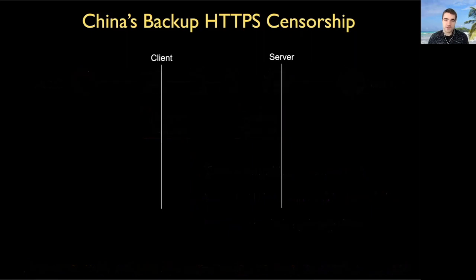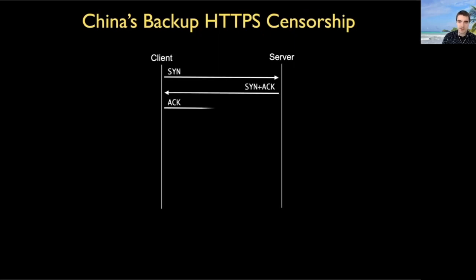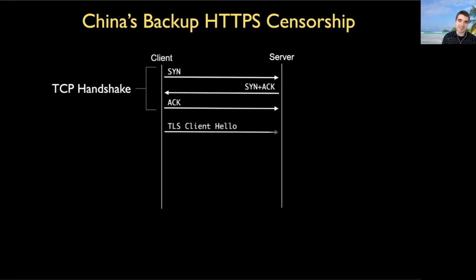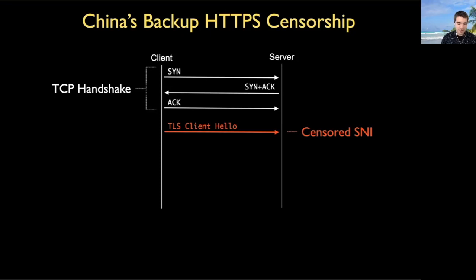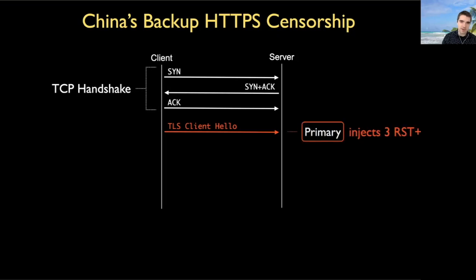Let's walk through where these sensors operate. Consider the start of a normal HTTPS connection. We first start with the TCP three-way handshake: SYN, followed by SYN-ACK, followed by ACK. Once complete, the client starts the TLS handshake and generates a TLS client hello — the packet that contains the server name indication field with the forbidden value. In our prior example, it would have the plain text string wikipedia.org. It's at this point that the primary middlebox steps in and injects three reset packets, trying to tear down the connection immediately.